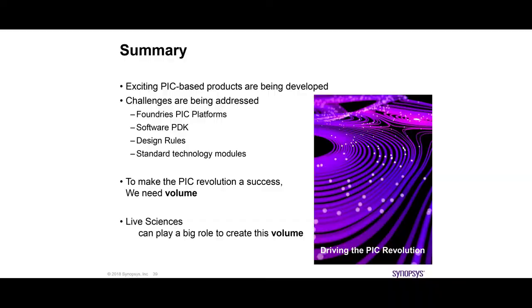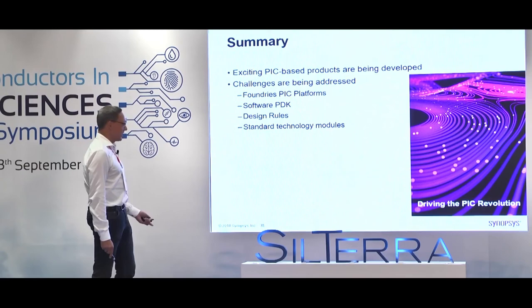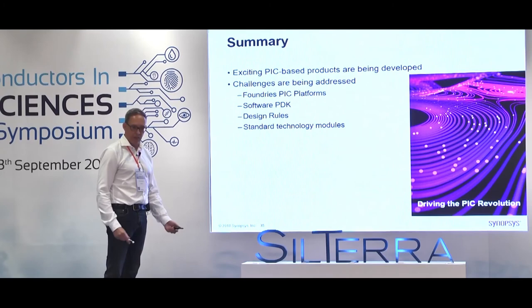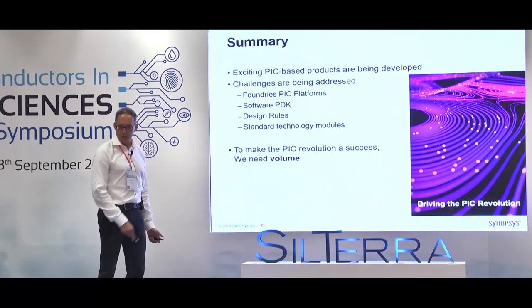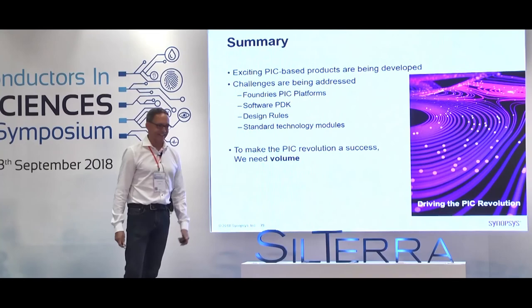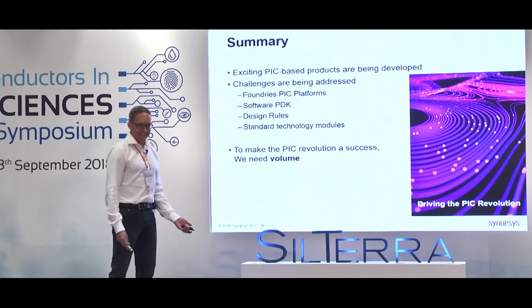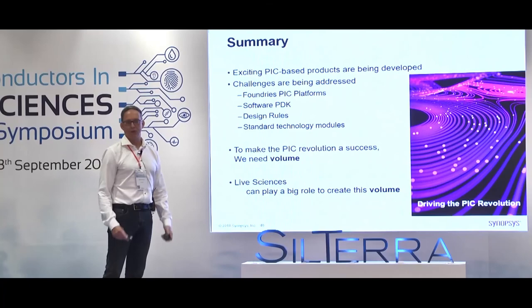To summarize: there are really exciting products being developed now for PICs. The challenges are being addressed — foundries are getting better platforms, PDKs are getting more mature, more design rules are being put in place, and standard technology modules are being developed. But to make the PIC revolution a real success, what we really need is volume. That's why I like disposable chips — we need more wafers. The life sciences area can really play a big role here, so please come up with nice applications with lots of disposable chips, and then everything will become better.